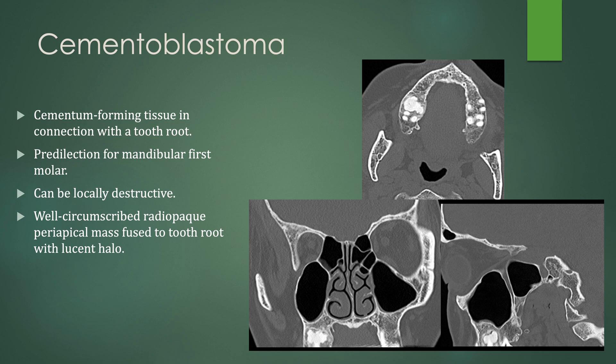Cementoblastomas are cementum-forming tissue in connection with a tooth root. They have a predilection for the mandibular first molar. They can be locally destructive, but they present as well-circumscribed radiopaque periapical masses fused to the tooth root, and they also have that lucent halo. You see this area of sclerosis at the root of the tooth with a peripheral lucency — visible on axial but better seen on sagittals and coronals.